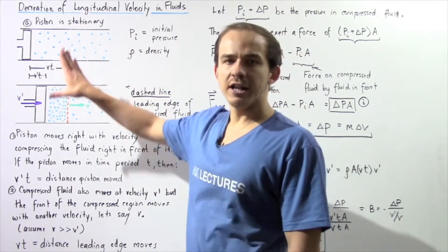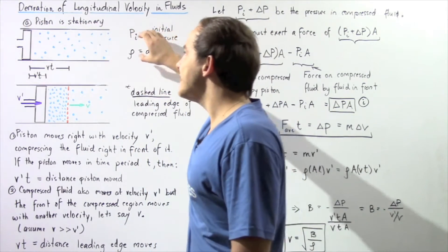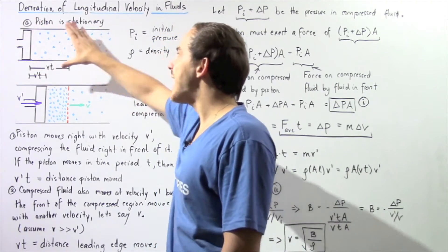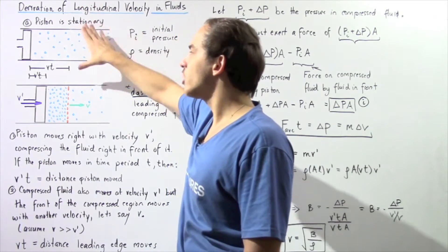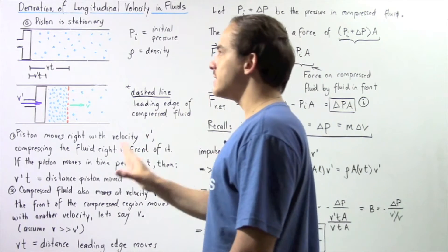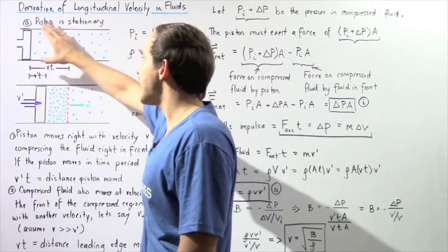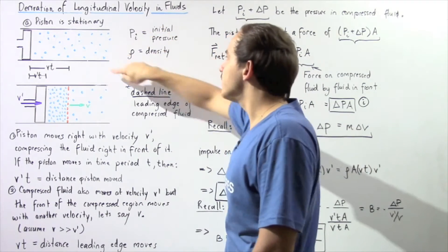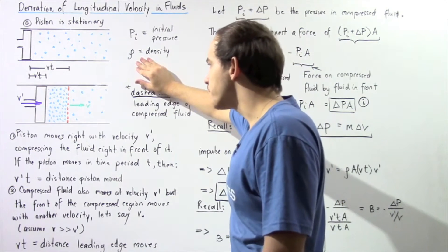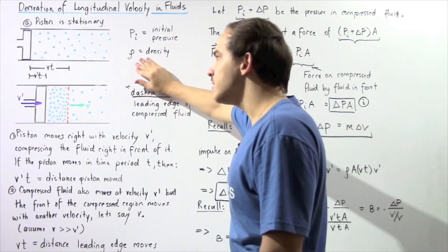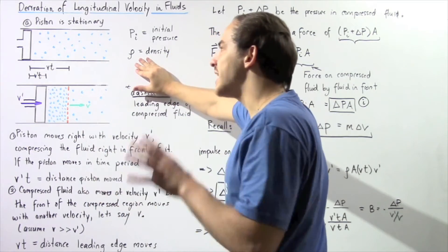Let's begin with the following setup. Let's suppose that we have a piston found inside a long tube, and inside this tube to the right of our piston, we have a certain fluid shown by the blue molecules. Initially, our piston is at rest. When the piston is stationary, the pressure found inside our fluid is given by PI, and the density of the fluid is constant, given by the Greek symbol rho. Now let's suppose that our piston moves abruptly to the right with a velocity V' over a time period T.